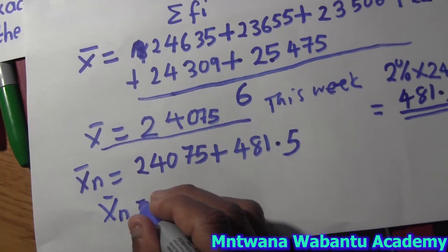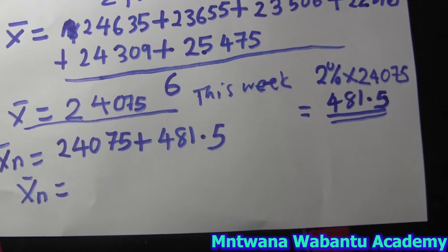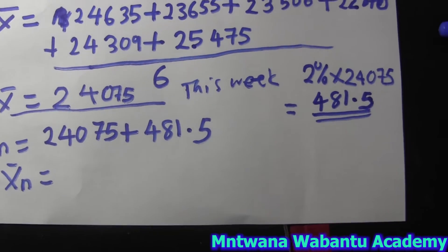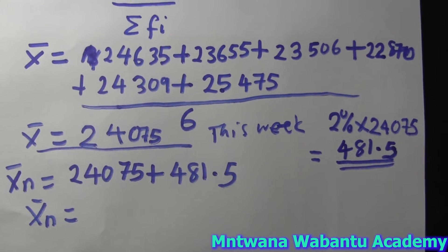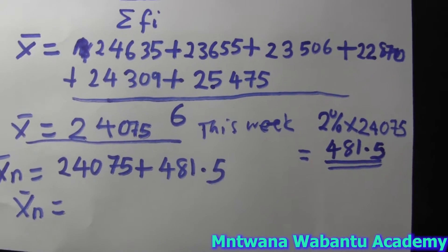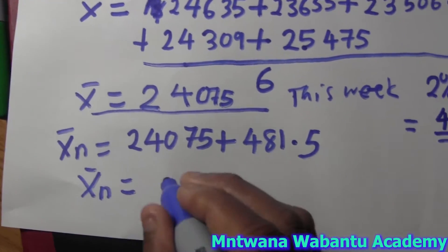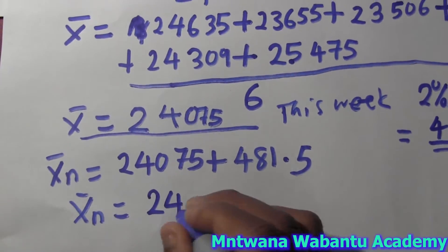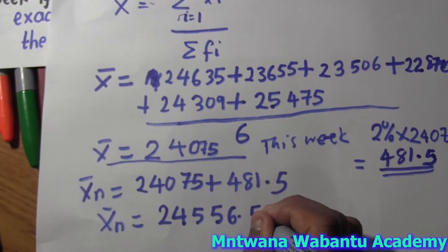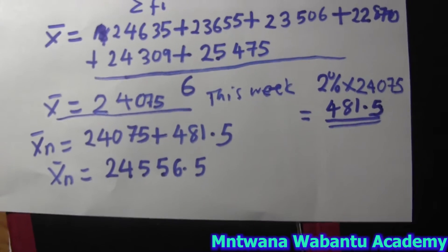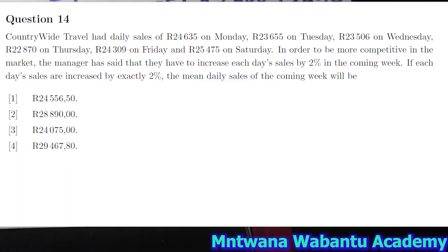Mean of next week equals, if you plug that into the calculator, this is going to give me 2455.65. So this is going to be my answer — the mean or average for next week is 2455.65.